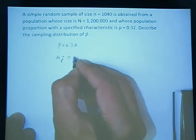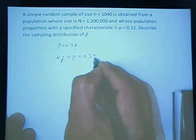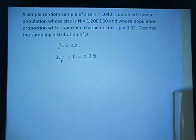That is the same as population mean and that is equal to 0.32. All samples - the mean of all samples proportion is equal to the mean of the population, population proportion.